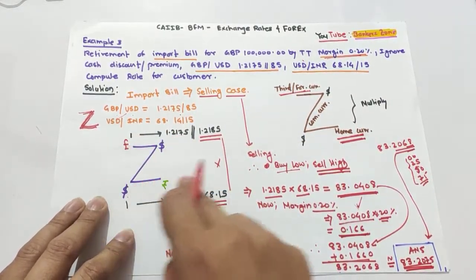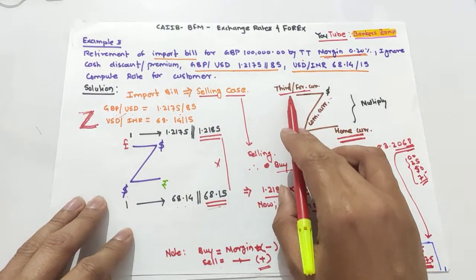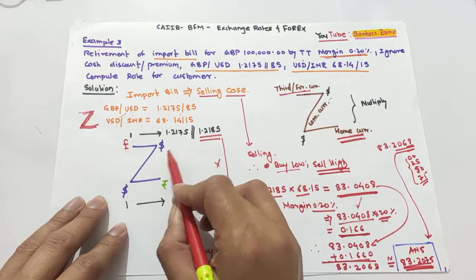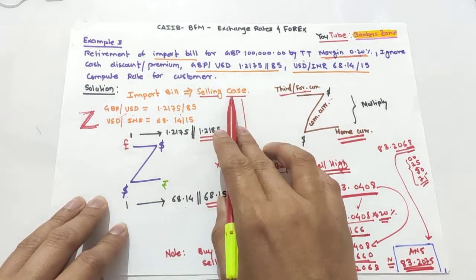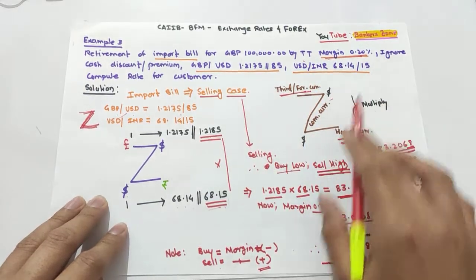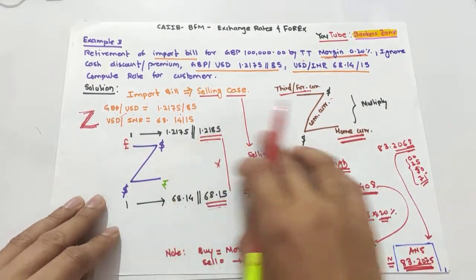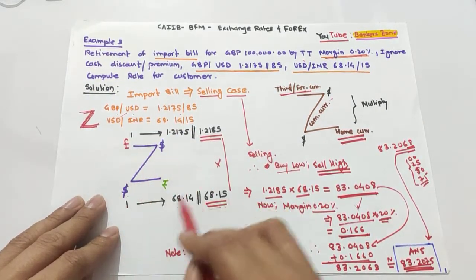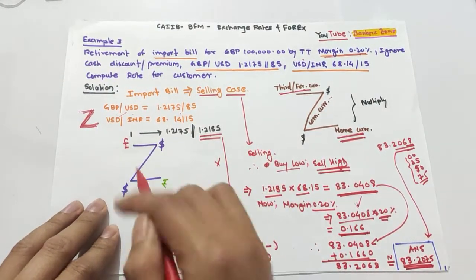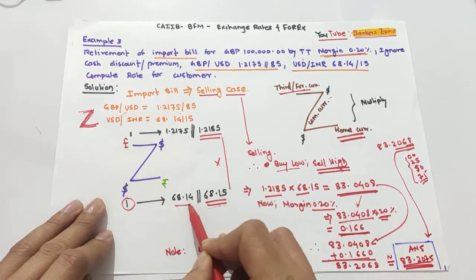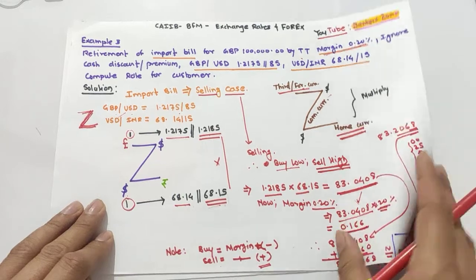To summarize the Z method: draw a Z, place the common currency on the vertical line, the home currency (rupees) at the bottom, and the remaining third currency at the top. The left side must be unity. Multiply the right side. If selling, take the higher value; if buying, take the lower value. Add the margin only if it is mentioned.